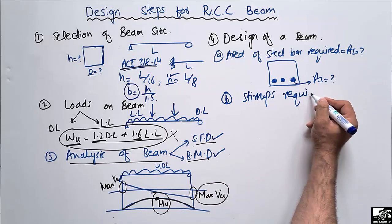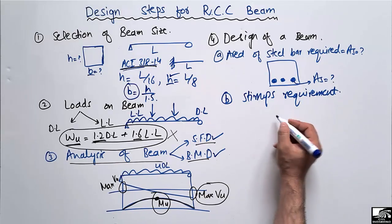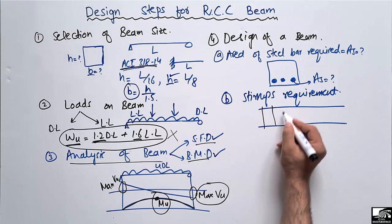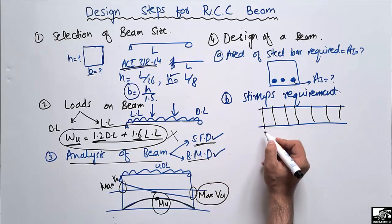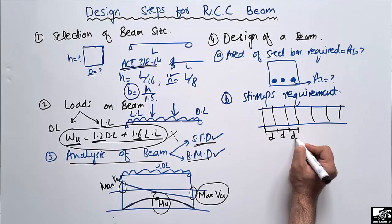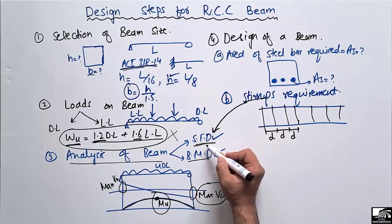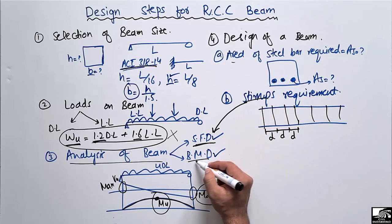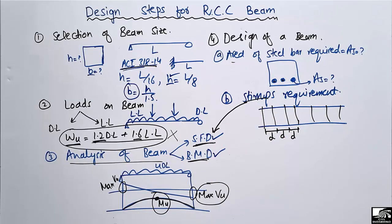Part B of the design step is the stirrups requirement — determining the spacing at which stirrups should be provided along the beam. The stirrups are provided throughout the beam, and their spacing is determined from the shear force diagram based on the shear values. To summarize: the stirrups reinforcement depends on the shear force diagram, while the main longitudinal bars depend on the bending moment value.